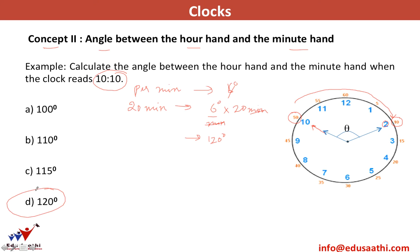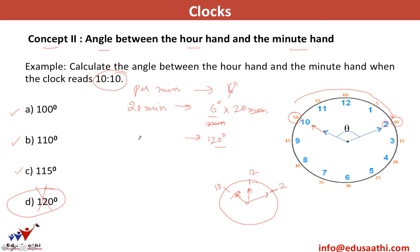That 120-degree answer is incorrect because in those 20 minutes, the hour hand has also moved. When the clock struck 10, the hour hand was exactly at 10 and the minute hand was at 12. But when the minute hand moves to point towards 2, the hour hand will also move slightly away from 10. So the angle is something less than 120 degrees — it could be 110, 100, or 115. The hour hand moves half a degree per minute.